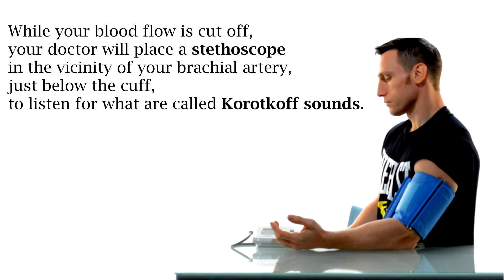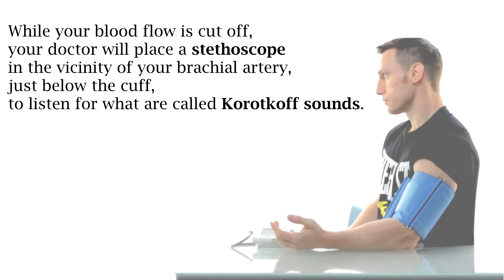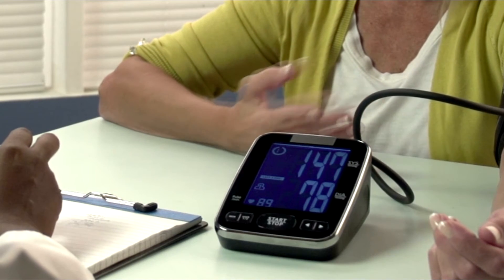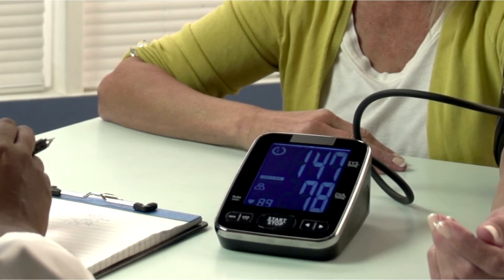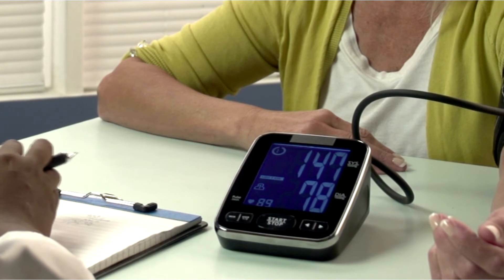While the blood flow is cut off, the machine — or your doctor using a stethoscope near your brachial artery just below the cuff — listens for what are called Korotkoff sounds. When the cuff begins to deflate, blood starts flowing again, and because it's more turbulent than normal it creates a sound the doctor or BP machine can detect. The beginning of this sound marks the start of systolic pressure and the end marks the start of diastolic pressure. In this particular reading, the machine registered a systolic pressure of 147 and a diastolic pressure of 78.